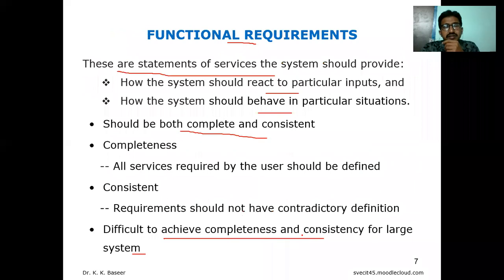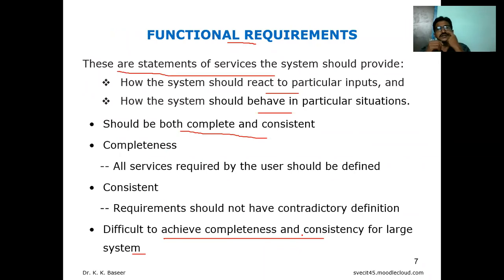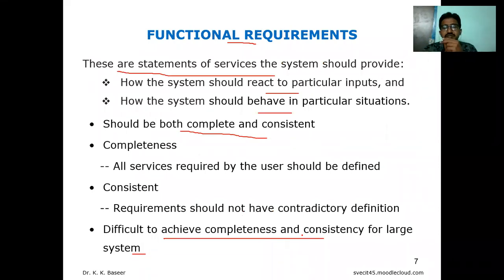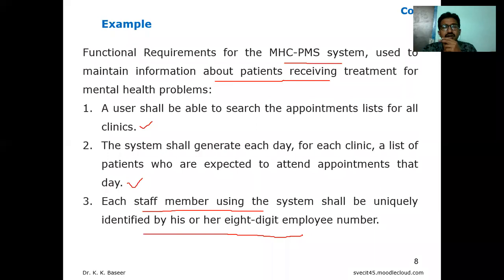Is it clear about the functional requirement? Very simple. How it will react for a given input, and how it will behave in a particular situation — so it is called complete and consistent. Completeness means all the services required by the user should be defined. Consistency means there is no ambiguity or controversy in the requirements. To achieve this for a larger system is a very tough task. As an example, we have seen the MHC PMS system for these functional requirements.